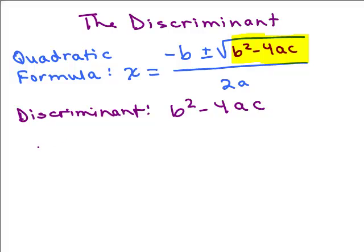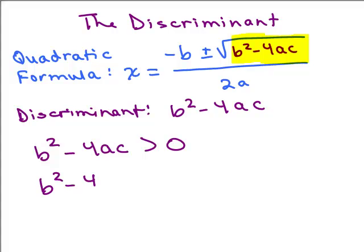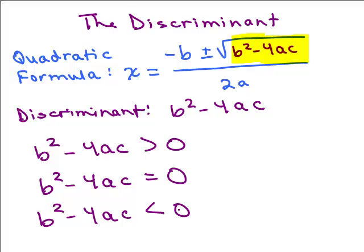Now if you plug in values, there are only three things that can happen. Either the discriminant is greater than 0, meaning it's a positive number, or it's equal to 0, or it's less than 0, meaning it's a negative number.